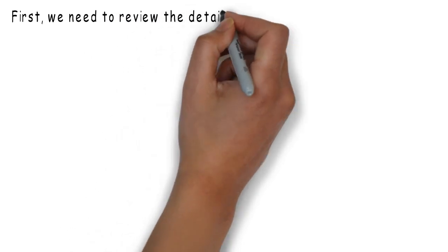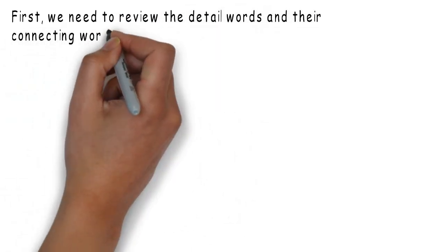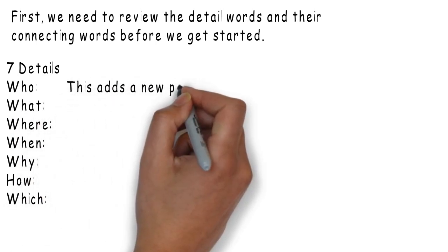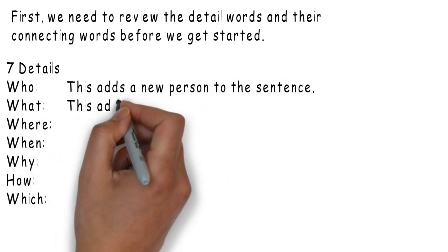First, we need to review the detail words and their connecting words before we get started. Here are the seven details. Who: this adds a new person to the sentence.